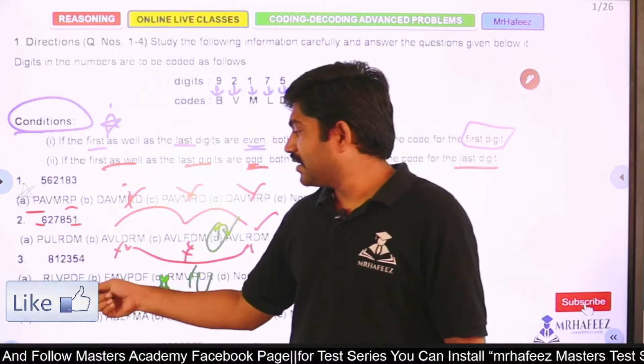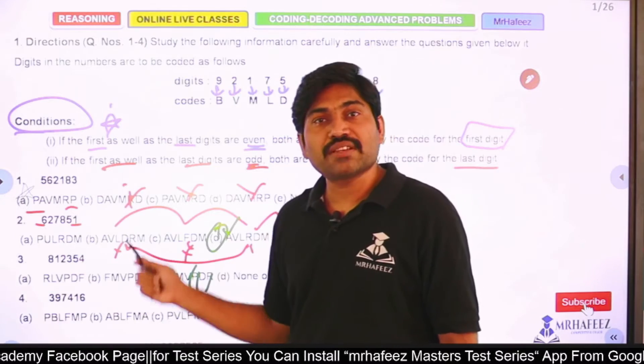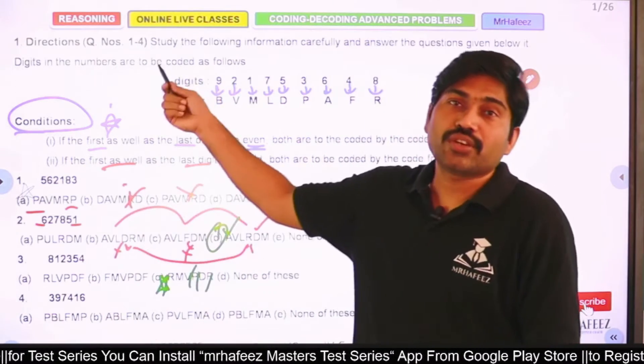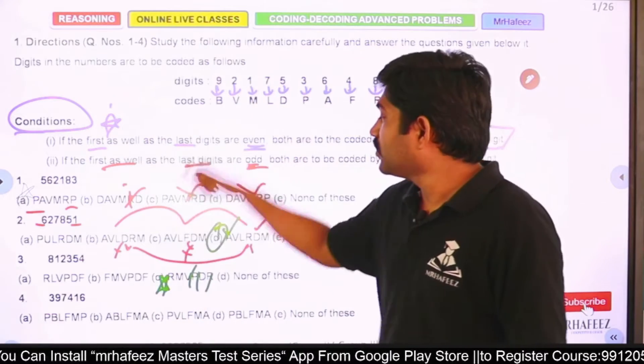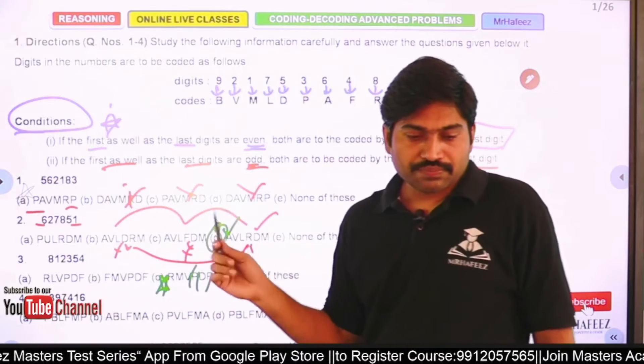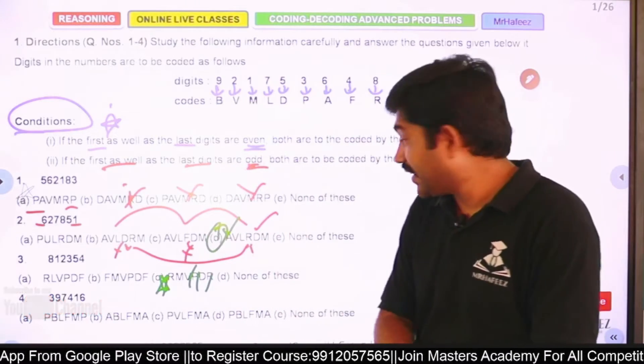Now 3, 9, 7, 4, 1, 6. 3 is odd number, 6 is even number. So there is no condition at all. I should implement it directly. 3 is P, 6 is A. P, A. So P, B, L, F, M, A.